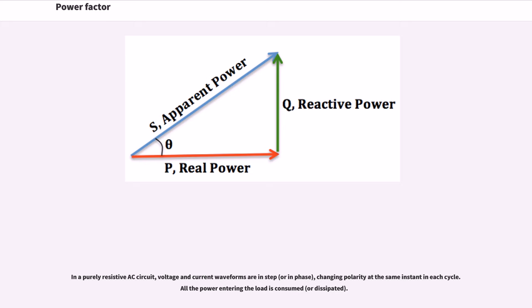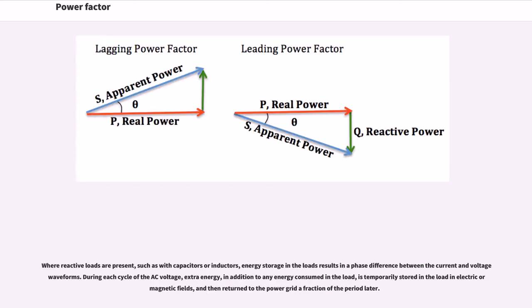In a purely resistive AC circuit, voltage and current waveforms are in step, changing polarity at the same instant in each cycle. All the power entering the load is consumed. Where reactive loads are present, such as with capacitors or inductors, energy storage in the loads results in a phase difference between the current and voltage waveforms.